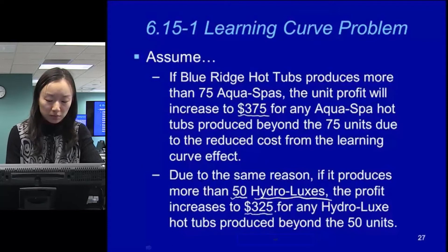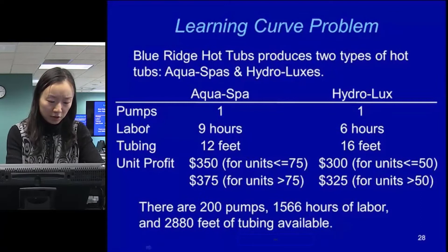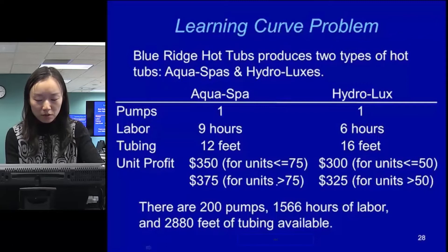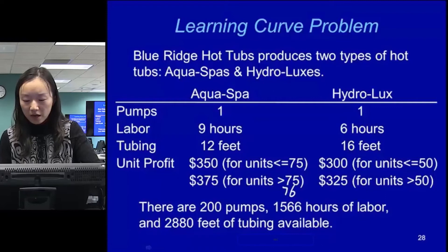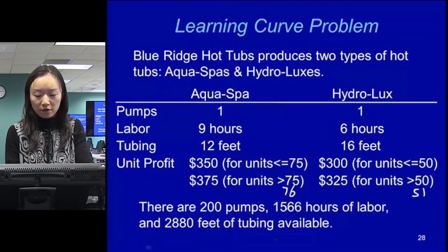This table summarizes the problem. You still have those resource constraints — pump, labor, and tubing. The unit profit for equal spots is $350 for units up to 75, and $375 for units beyond that, starting from the 76th unit. For hydrolysis, the higher profit starts from the 51st unit. There are 200 pumps, 1,566 hours of labor, and 2,880 feet of tubing available.